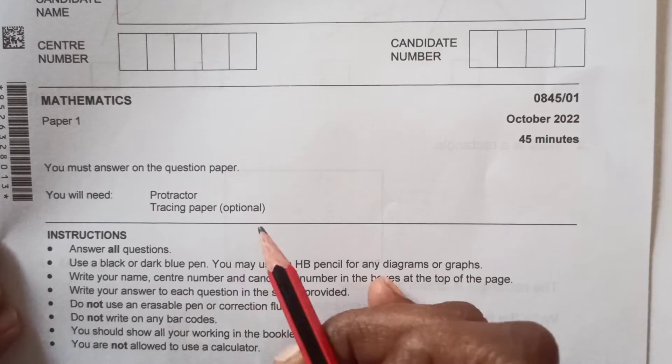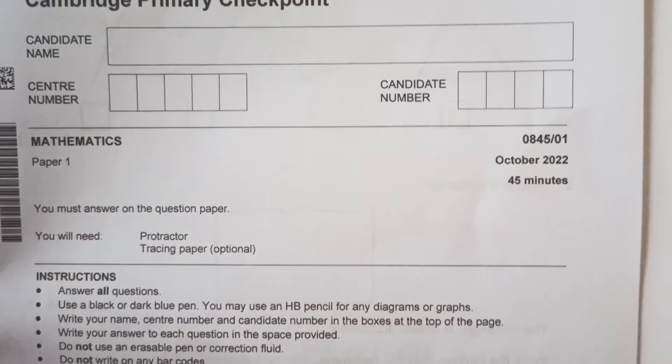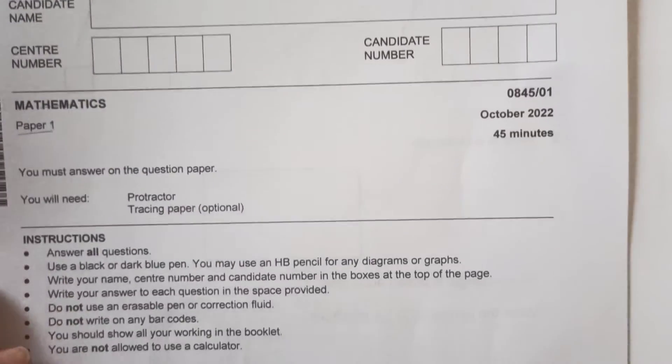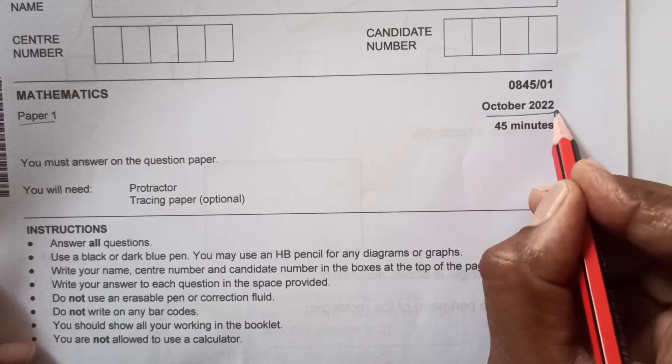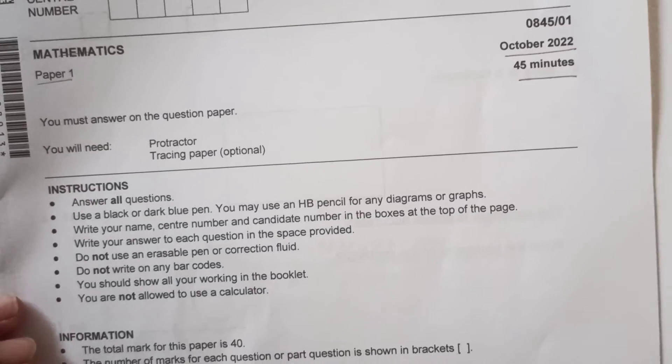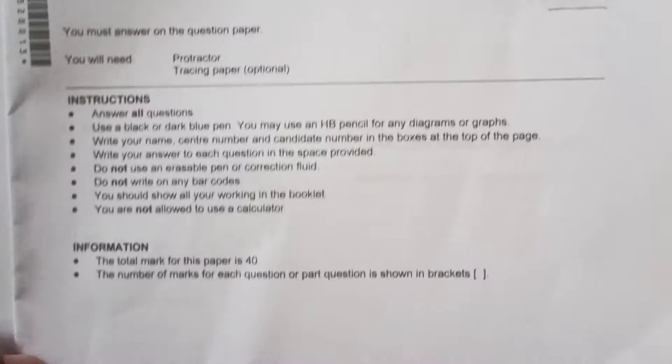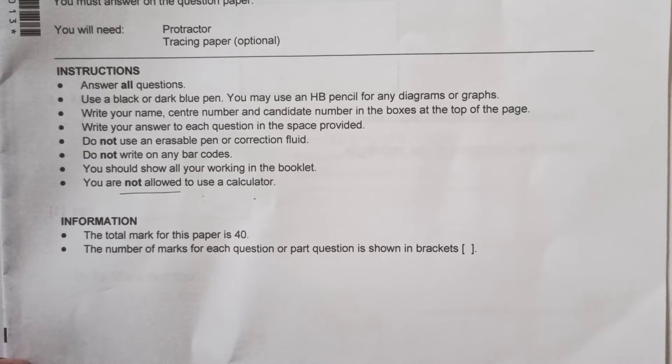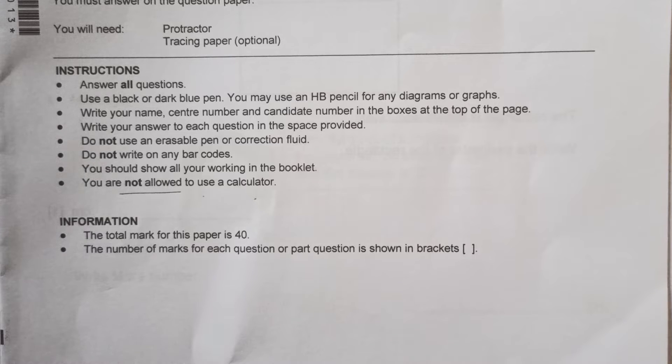Hello everyone, welcome back to my channel. Today we are going through Cambridge Primary Checkpoint Mathematics Paper 1. This is the latest paper from October 2022 series. Time to complete this paper is 45 minutes. As this is the first paper, you are not allowed to use a calculator. These are the instructions here you can go through. Before we start, I request you guys to subscribe to my channel if you have not done so. Those who have already subscribed, thank you so much for your support. So let's start.